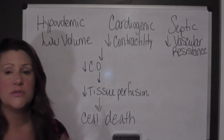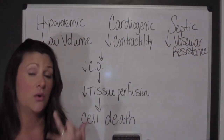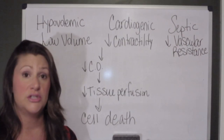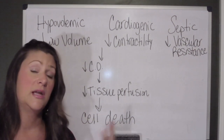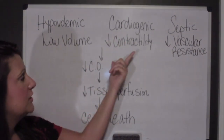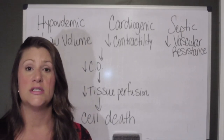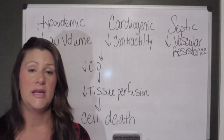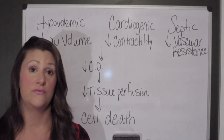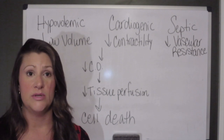Hypovolemic shock stems from low circulating volume. Most often, a GI bleed or trauma. Cardiogenic shock involves decreased myocardial contractility — a decreased ability of the heart to pump. The most common etiology for cardiogenic shock is a massive left ventricular myocardial infarction, which knocks out the muscle of the heart and decreases its ability to pump effectively.